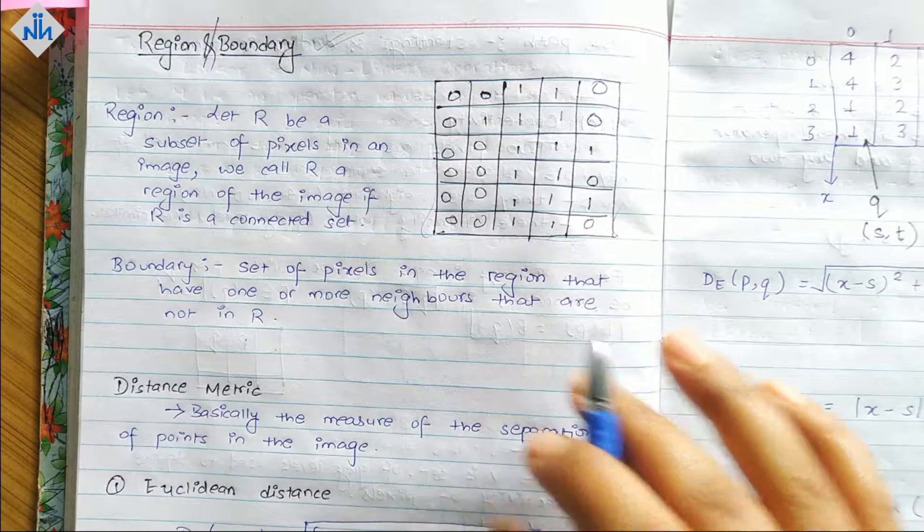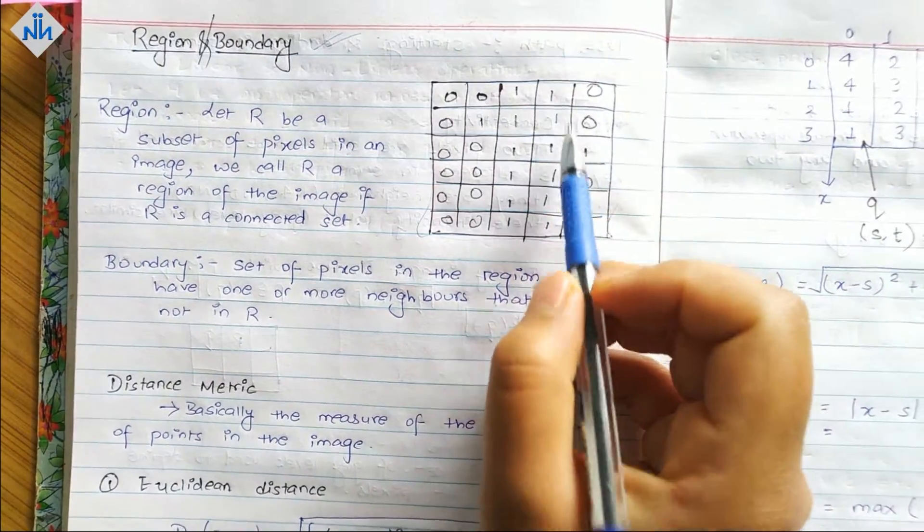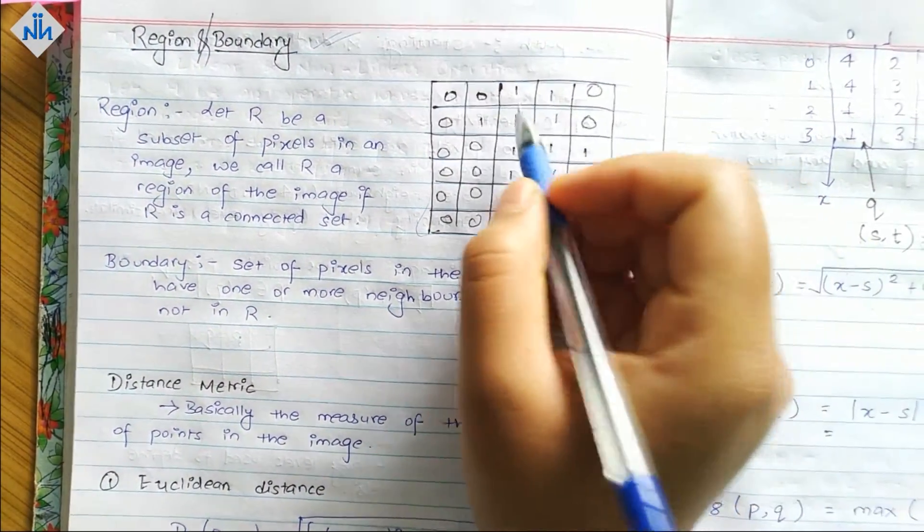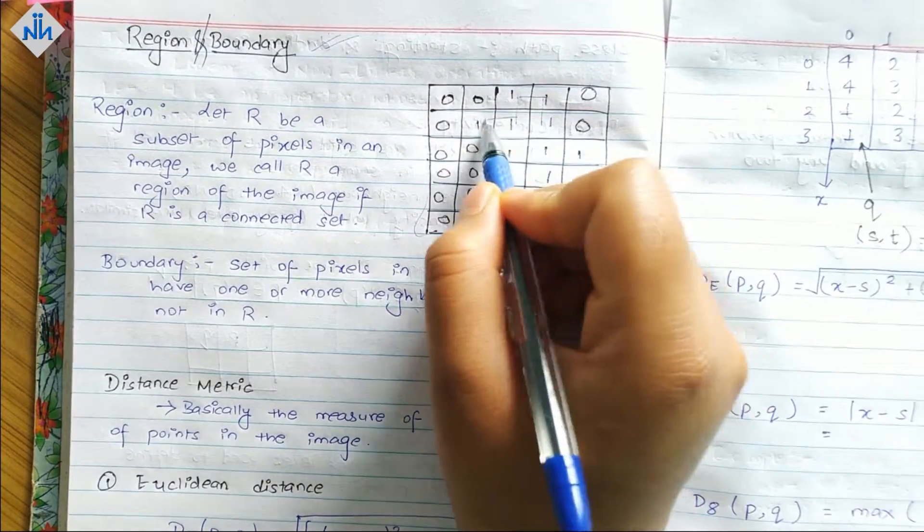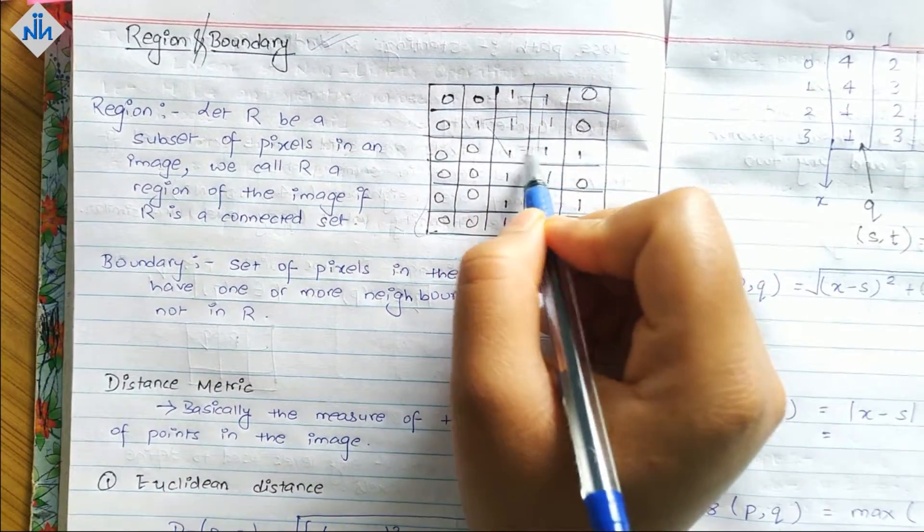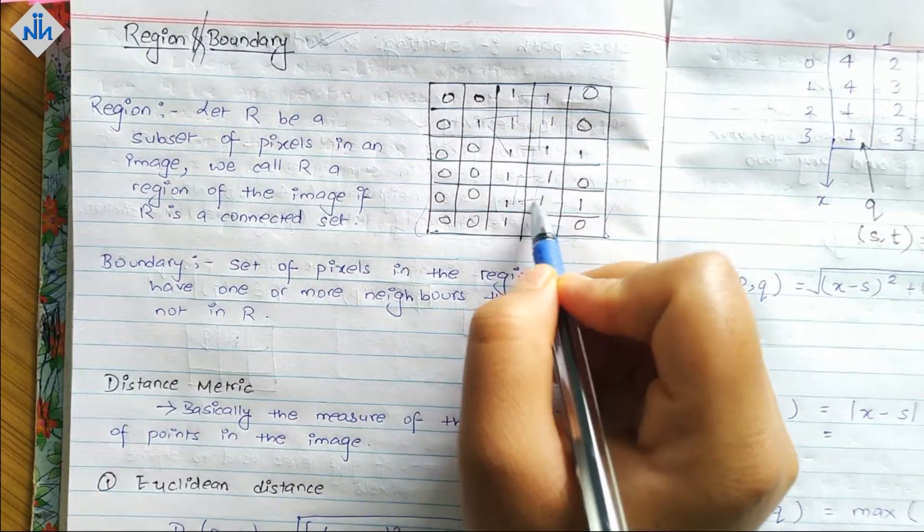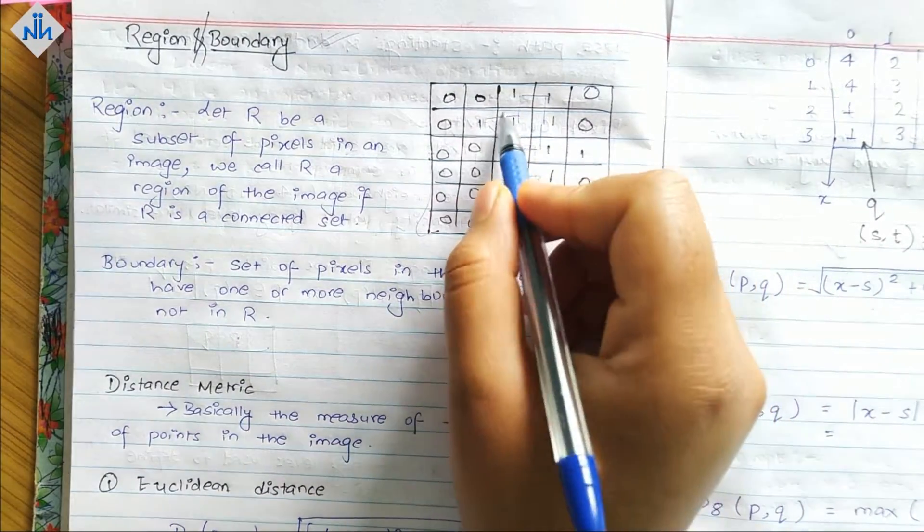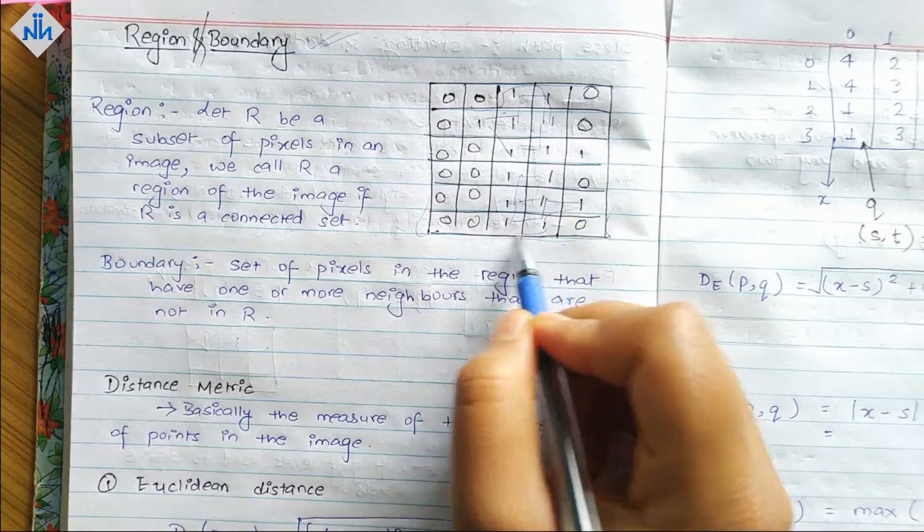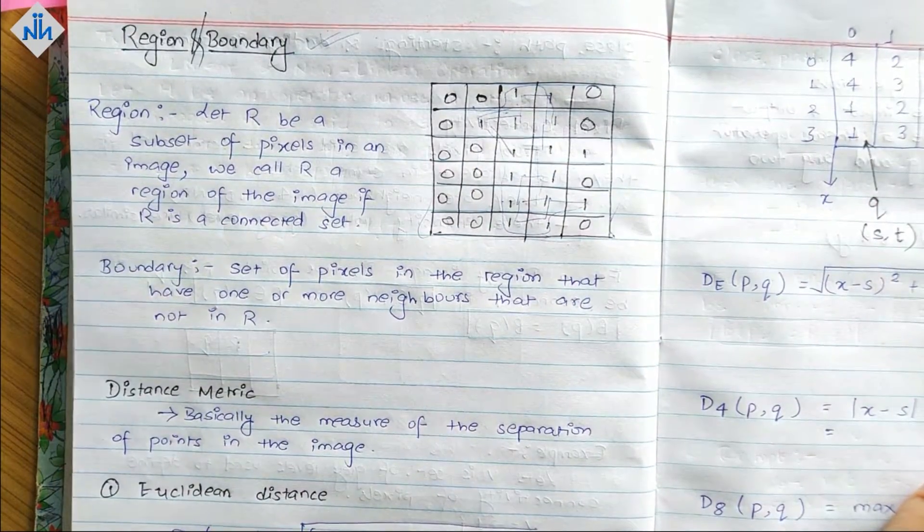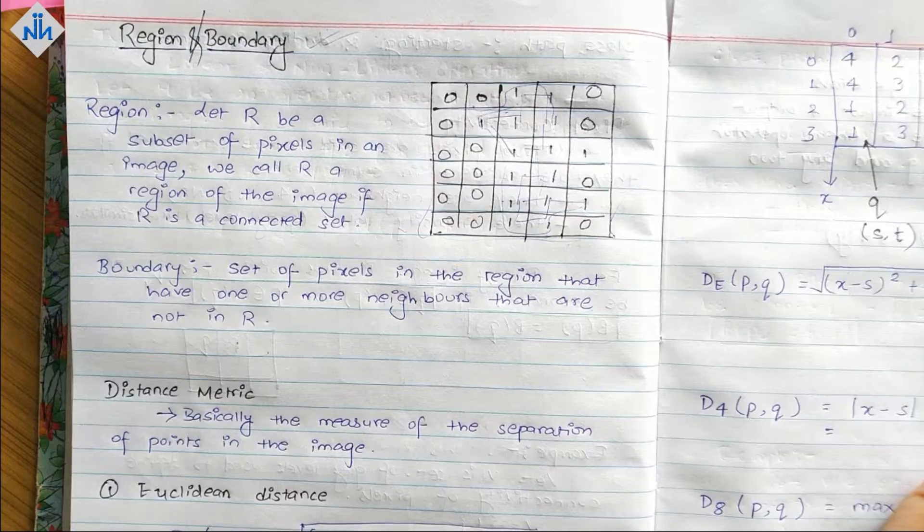In this diagram we can see these pixels are all connected, so this whole entire subset will be called a region. Now, what is a boundary?